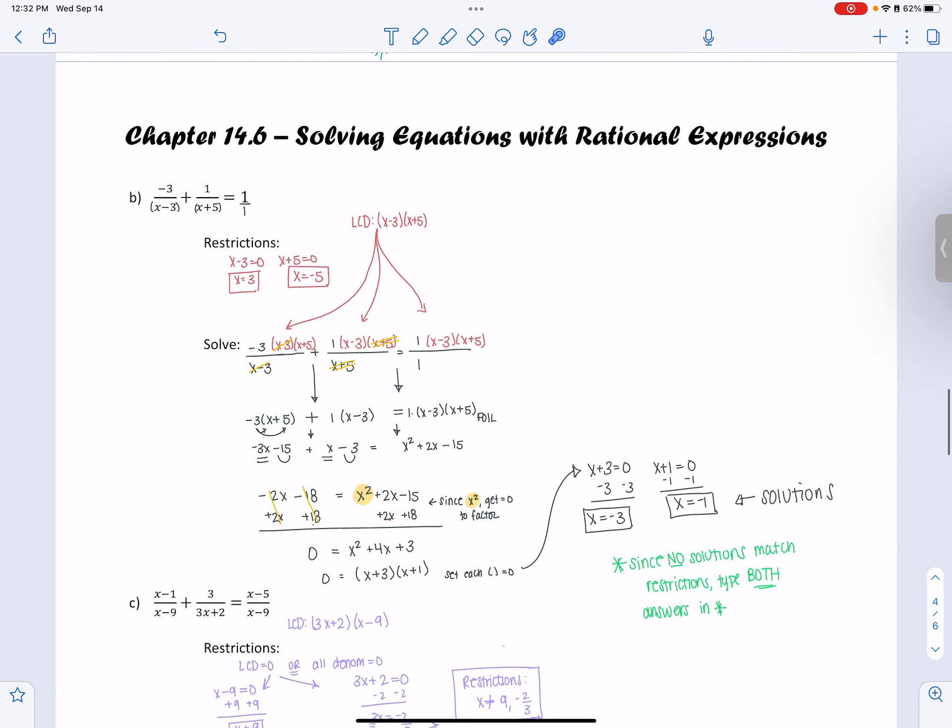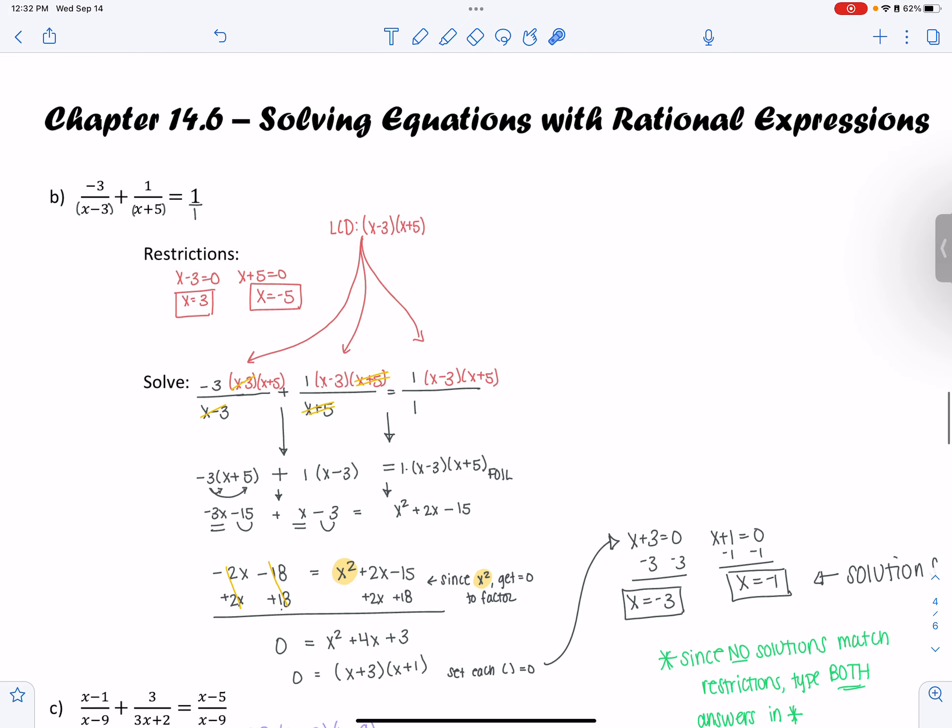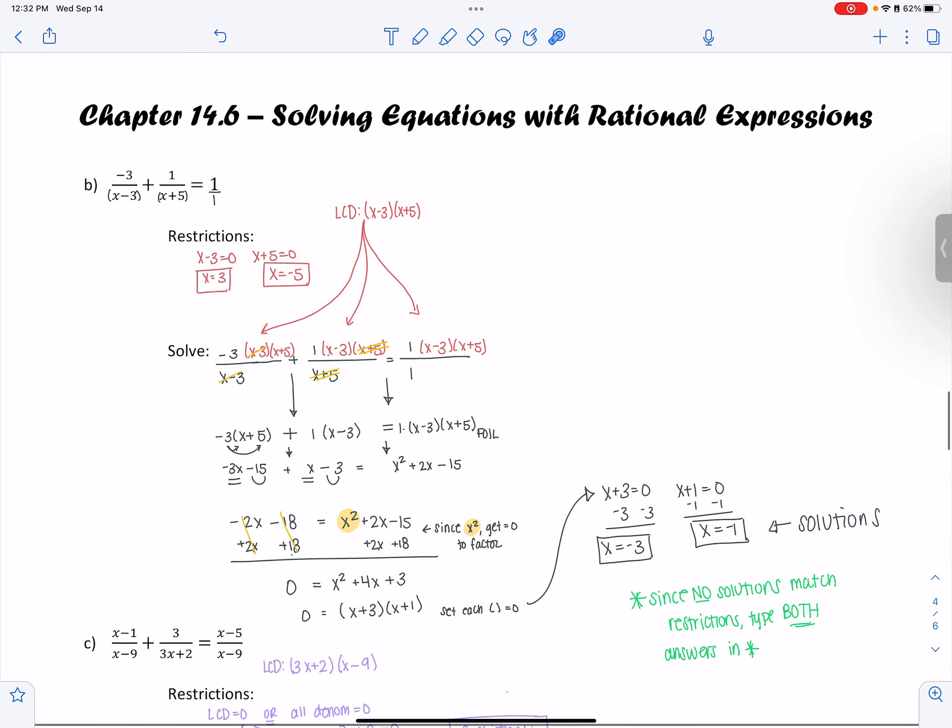And then in this next example, again, you can pause the video and write this stuff down. I just wanted to kind of have document of these examples worked out with the solutions. I get a restriction of x equals 3, x equals negative 5, and then I get answers of x equals negative 3, x equals negative 1.